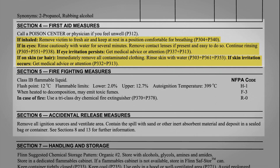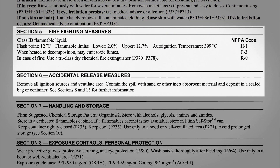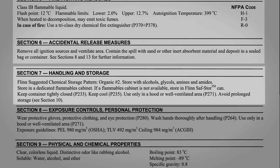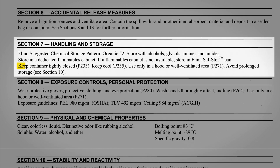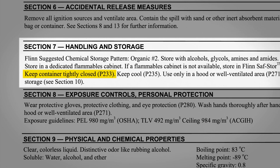Sections 5 and 6 contain reference information for firefighters and other emergency personnel who respond to a fire or chemical spills. Section 7 describes ways to minimize risk when handling and storing a chemical. Many of these recommendations are in the form of standard precautionary statements, such as P233: keep container tightly closed.